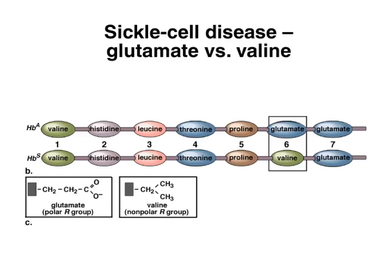That's the case of sickle cell anemia. In sickle cell anemia, we have the primary structure of the normal protein — these are only seven amino acids shown, in a very long protein. And this is the sickle cell version in the bottom. And the only difference is this amino acid here; the rest of the code is the same. But this amino acid in the normal protein is a glutamate, which is a polar amino acid.